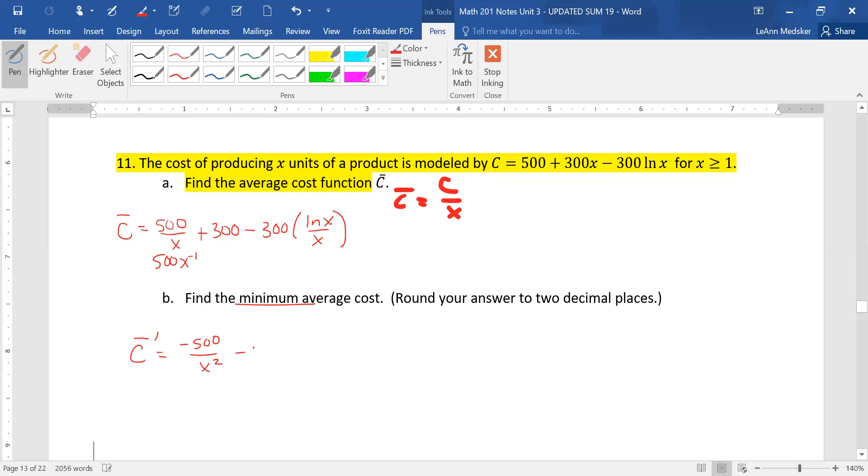We'd have our minus 300, and this is a quotient rule, so I'm going to write over here to the side, this is natural log of X and X. Derivative of natural log of X is 1 over X, derivative of X is 1, so this is going to be 1 over X times X is just going to be 1 minus natural log of X, all over the bottom squared, which is X squared.